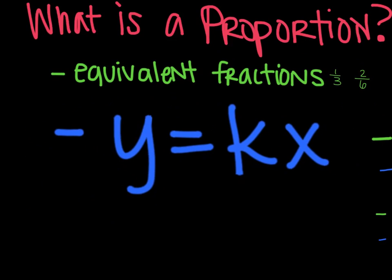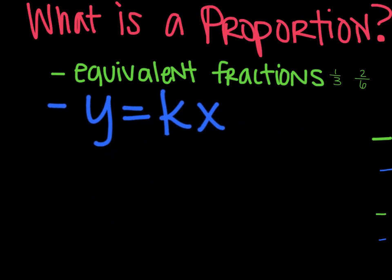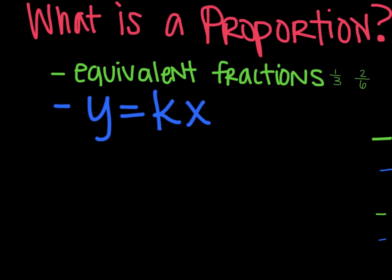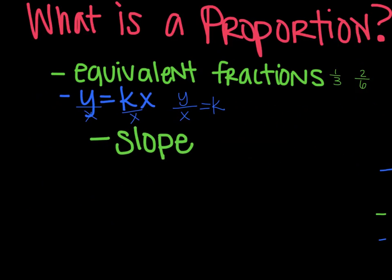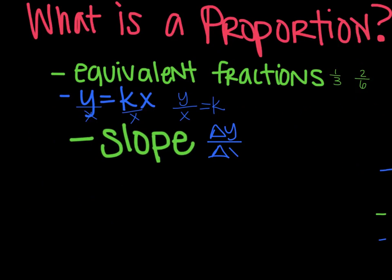Next one is that it is y equals kx. It is direct variation. And so you can solve for k by getting rid of x. So then you end up with y over x equals k. It is slope. And slope, we've talked about, is the change in y over the change in x.